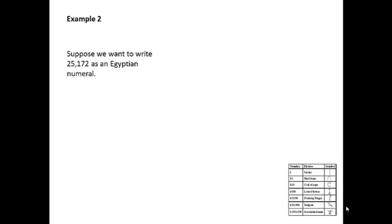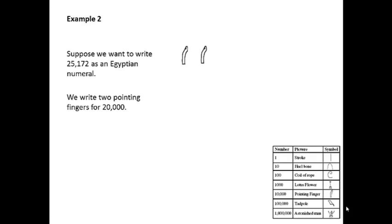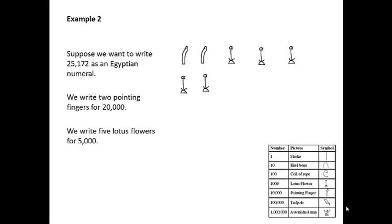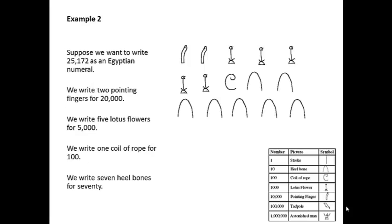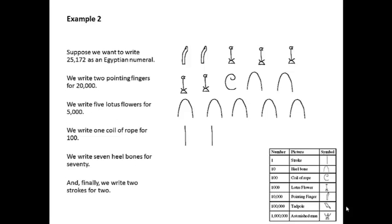Second example: suppose we want to write twenty-five thousand one hundred and seventy-two as an Egyptian numeral. First we'll have the twenty thousand, which would be two pointing fingers. Then for five thousand we'll have five lotus flowers, then for one hundred we'll have one coil of rope, for seventy we'll have seven heel bones, and for two we'll have two strokes.